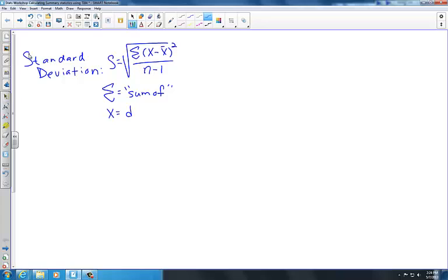X represents each individual data point contained within our set. And x-bar is the symbol we use to represent the sample mean for a given data set. The symbol n is used to indicate the total size of our sample.